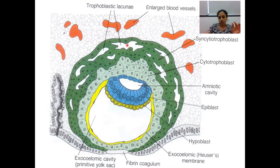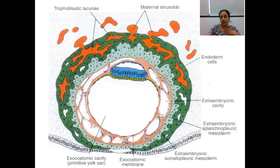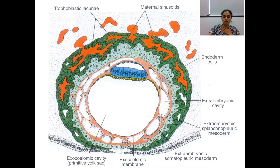The lacunae initially are small, join to form a larger one, and form an intercommunicating network. The cytotrophoblast is visible here. As the syncytiotrophoblast invades, it erodes the maternal blood capillaries, forming maternal sinusoids. These communicate with the lacunar system within the syncytial trophoblast, so blood easily oozes into the lacunar system. This is how the initial uteroplacental circulation takes place.